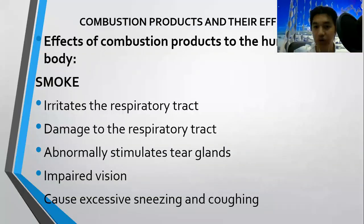Here are the effects of combustion products on the human body. Smoke irritates the respiratory tract — since you cannot breathe fresh air, there is an effect on your respiratory system. It may be difficult to breathe because what you are breathing is no longer fresh air, but the effect of the smoke. Your respiratory tract can be damaged, and there will be abnormally stimulated glands and impaired vision because smoke may also irritate your eyes.